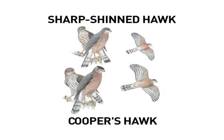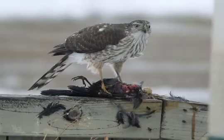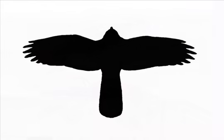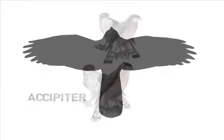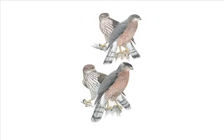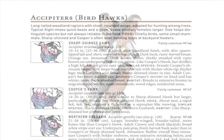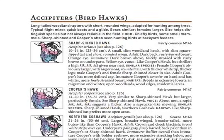Two other raptors that many North Americans encounter frequently are the sharp-shinned hawk and the Cooper's hawk. In addition to being common and widespread, they are the species most likely to appear at bird feeders, hoping to dine on the other patrons. As both are accipiters, they have fairly short, rounded wings but long tails. Telling Cooper's from sharp-shinneds has long been a classic North American identification puzzle — even the pros sometimes see birds that leave them unsure. The secret is to learn all the marks and really look at each bird you see. Rarely can an accurate identification be made on the basis of a single character.